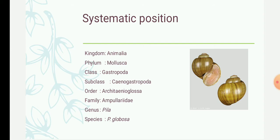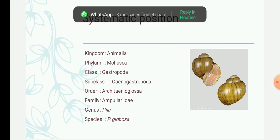For the type study you need to remember kingdom, phylum, class, order, family, genus, and species. There is no need to remember the subclass and other intermediate ranks.